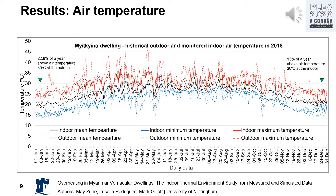In the comparison between year 2018 and the baseline typical weather year for outdoor conditions, we found the warmer hours above 30 degrees Celsius increased 1.8 times. In the outdoor weather, 22.8% of annual hours exceeded the dry-bulb temperature of 30 degrees Celsius. In the monitored dwelling, 30% of annual hours exceeded an air temperature of 30 degrees Celsius.